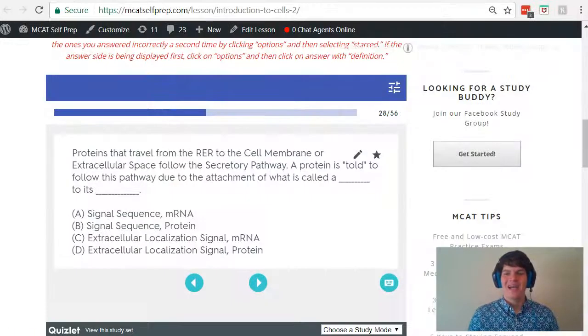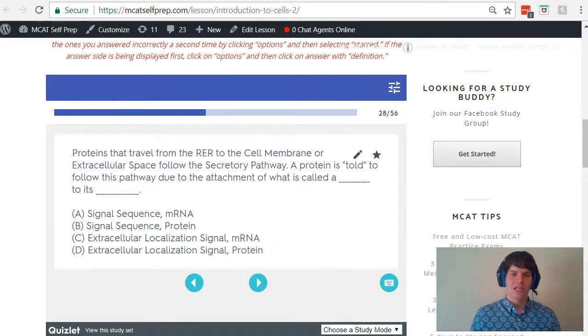With that understanding in mind, let's take a second look at our practice question. Proteins that travel from the RER, rough endoplasmic reticulum, to the cell membrane or extracellular space follow the secretory pathway. A protein is told to follow this pathway due to the attachment of what is called a signal sequence to its protein, right? It's that first sequence of amino acids on a protein. For this reason, answer choice B is the correct answer here.